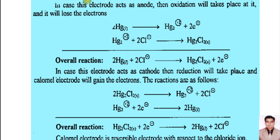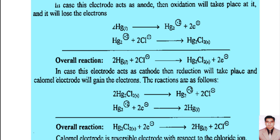Oxidation and reduction can take place depending on the other electrode connected with the calomel electrode. If oxidation takes place, the overall reaction has two electrons on the product side — mercury releases two electrons. If reduction takes place, two electrons are on the reactant side — mercuric ions receive two electrons and produce two moles of mercury. The calomel electrode is a reversible electrode with respect to chloride ions, just as the SHE is a reversible electrode with respect to hydrogen ions.